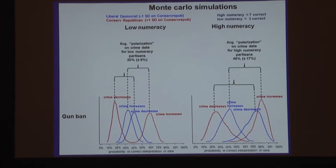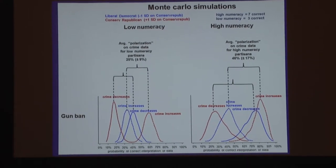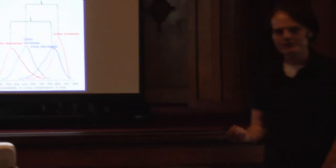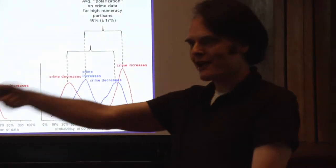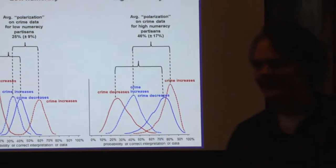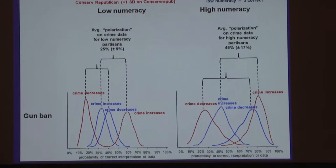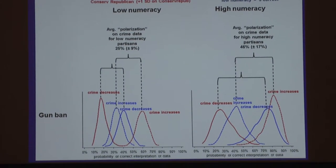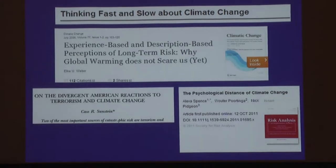So what do you see? The high-numeracy subjects aren't missing the right answer when it's consistent with their ideology, whereas some low-numeracy people are. But when the information isn't consistent with their ideology, they figure out some way to pry open the logic trap with a confabulatory answer about why the experiment's not very good — but only when they don't want to accept the inference that the study would otherwise support.